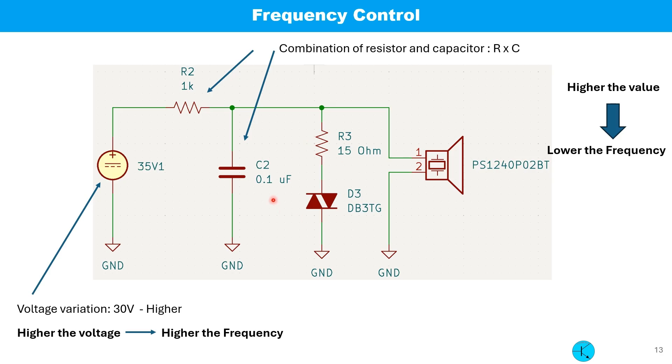There are three ways we can change the frequency of oscillation. The first one is the supply voltage. Second is changing the capacitor value. And the third is changing the resistor values.